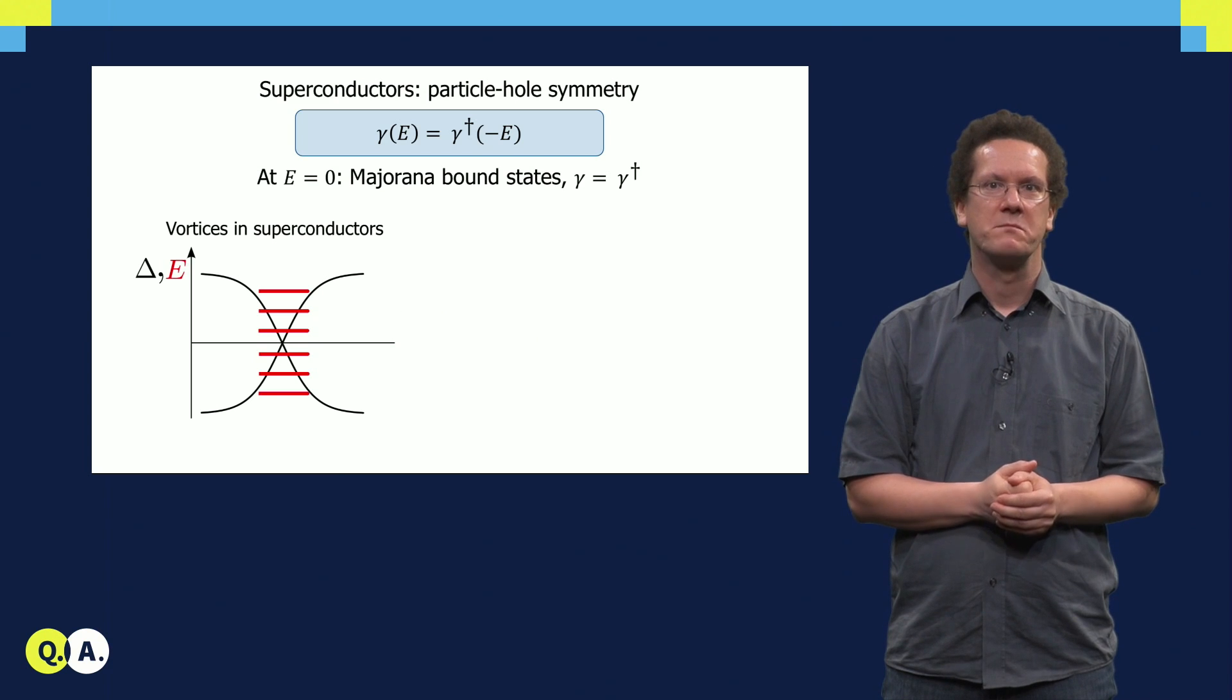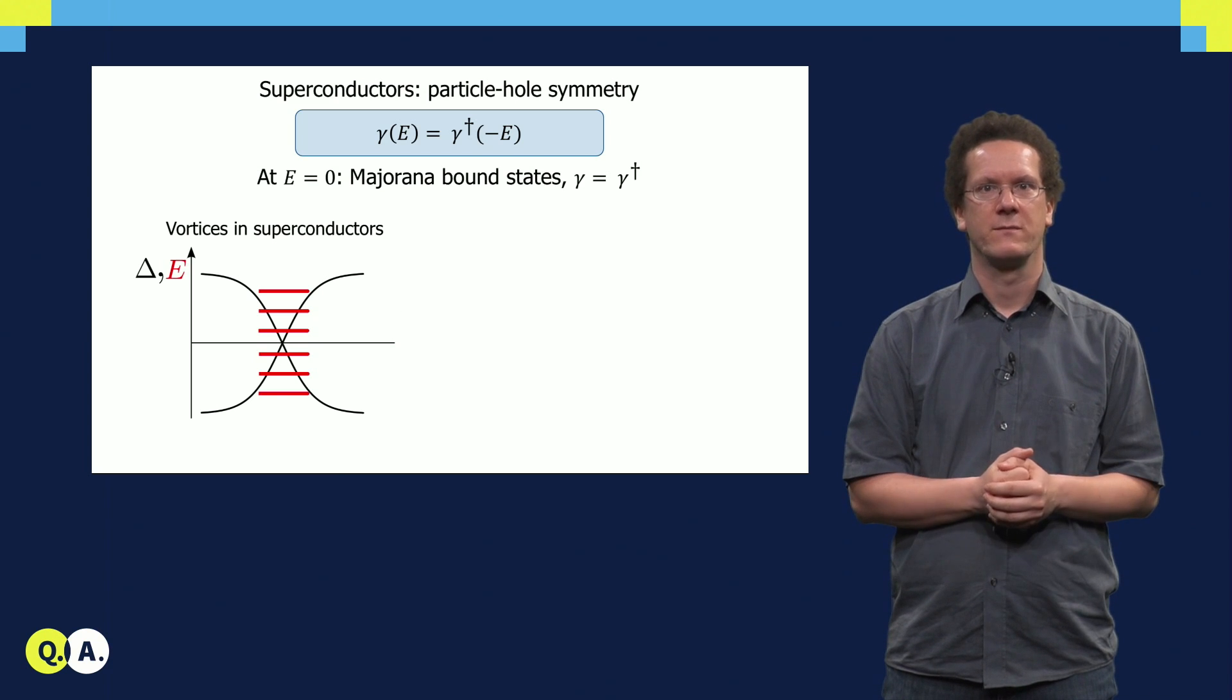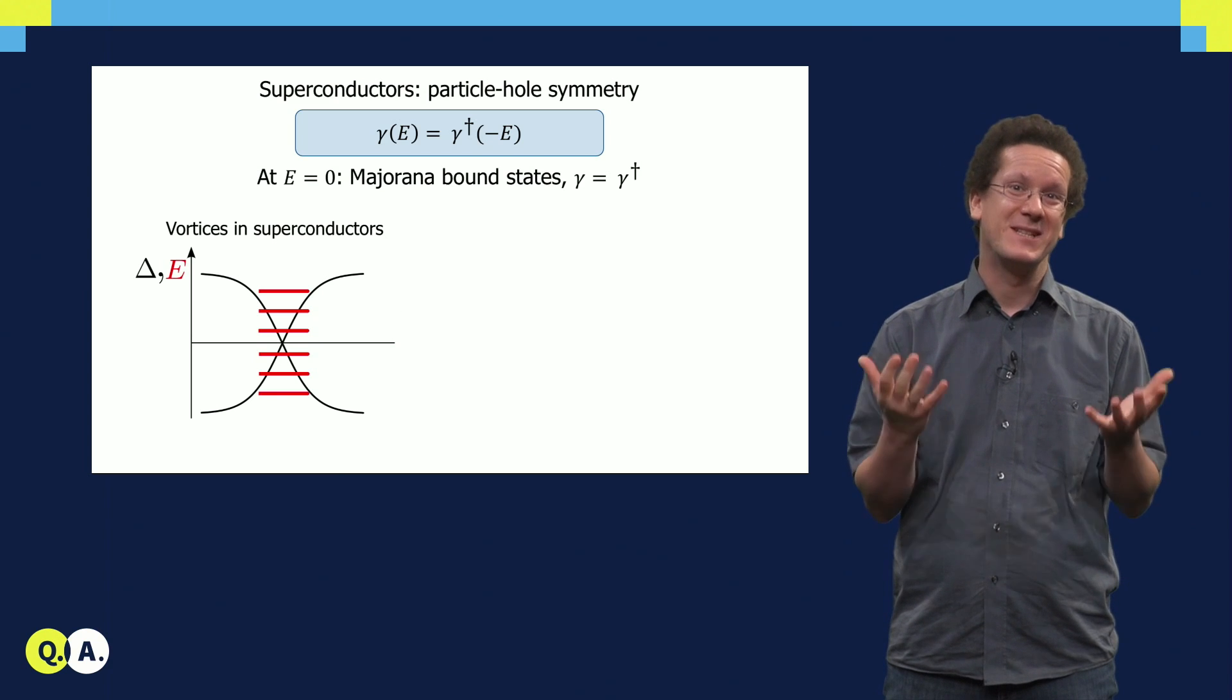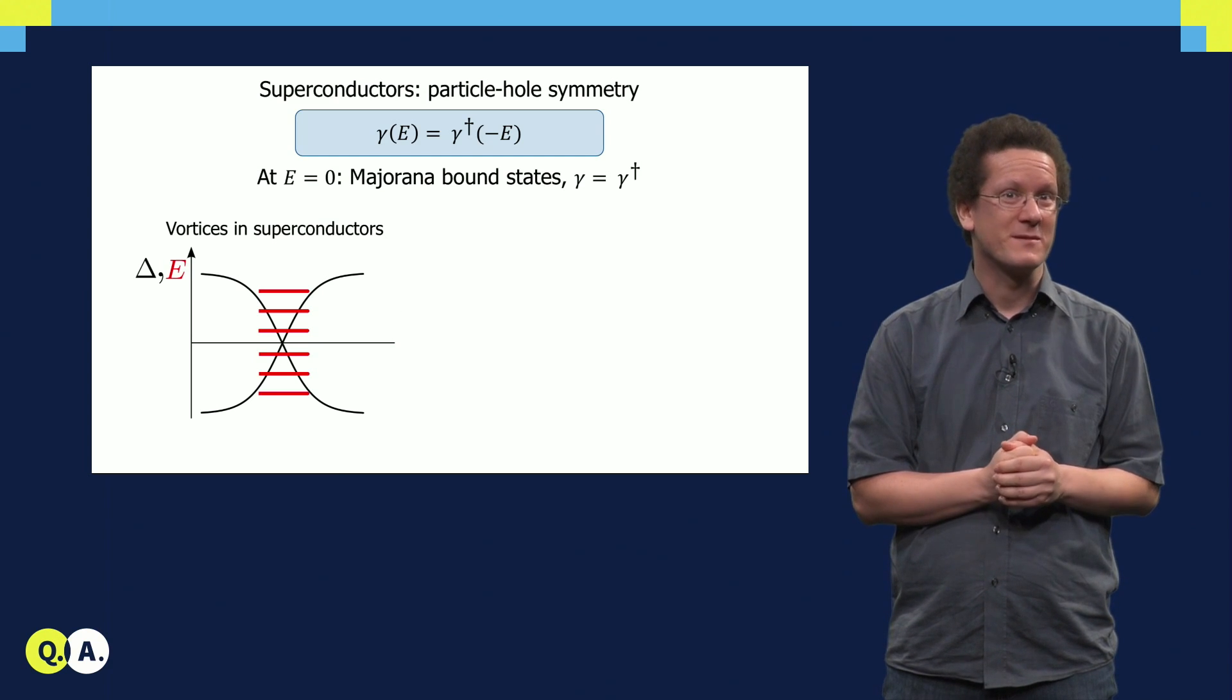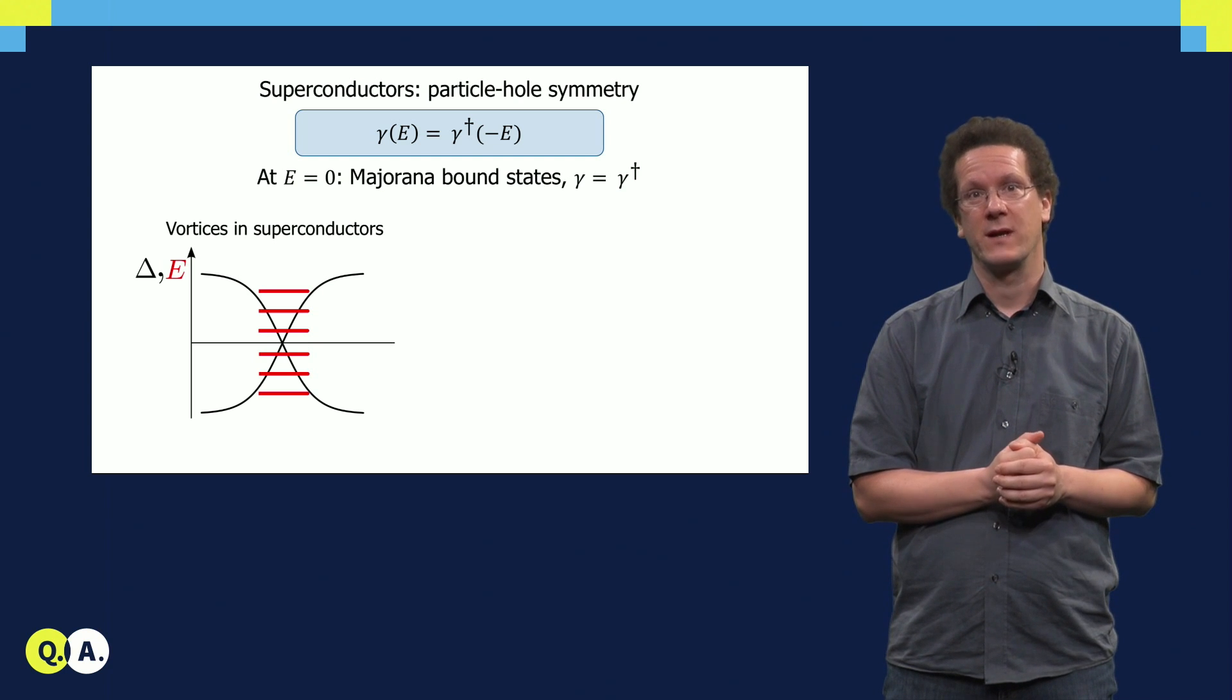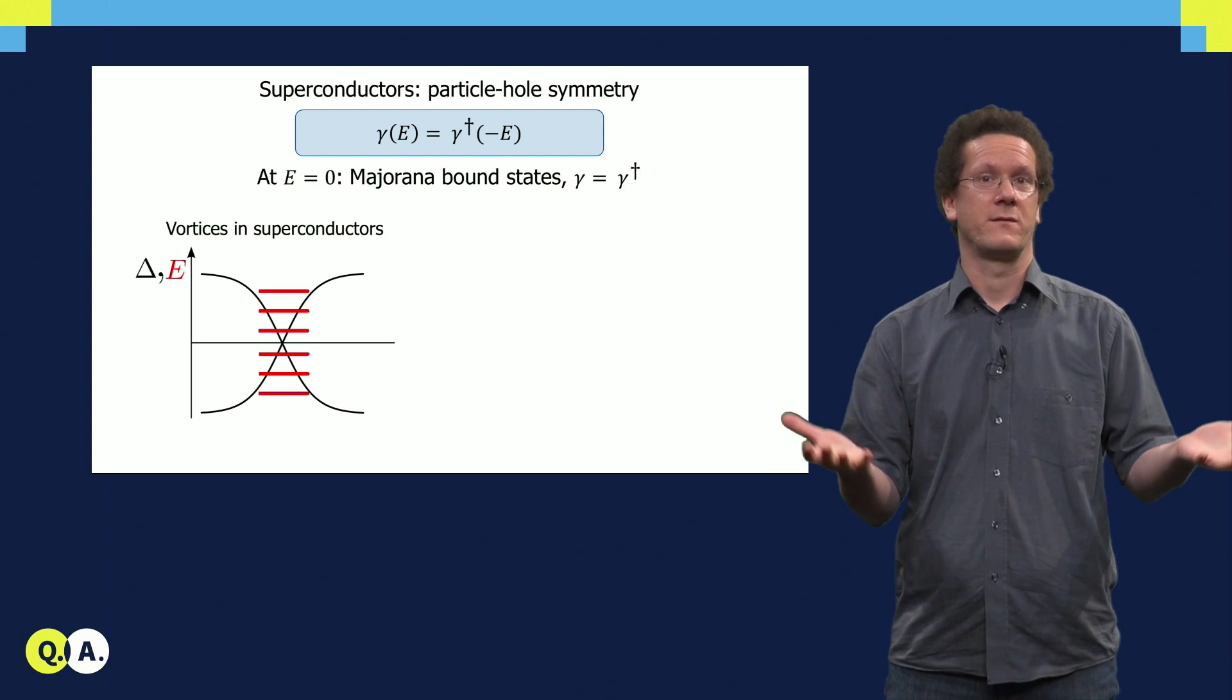At this point, it might seem easy to find Majoranas. We just have to find states in superconductors with zero energy. But this is actually not as easy as it seems. Because how could one get states at small energies in a superconductor? After all, there is the superconducting gap.